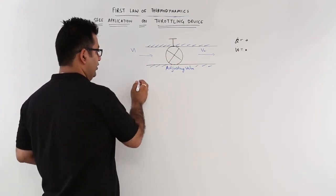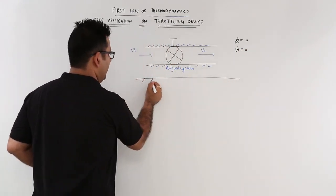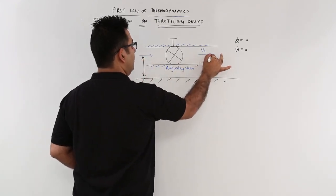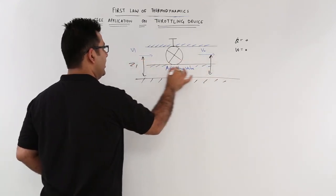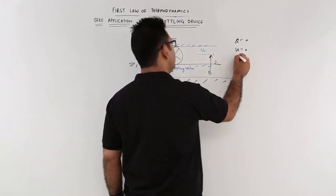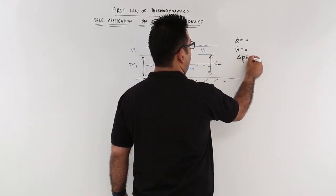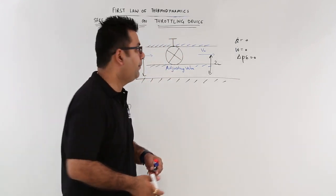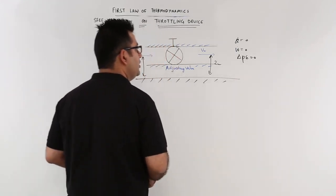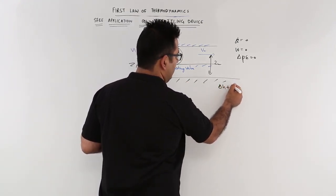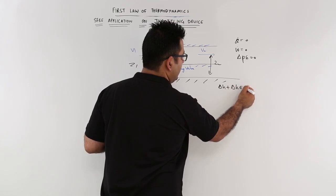Now one more thing. If you take this as your reference plane, the fluid elevation at both entrance and exit are the same. So you also have to assume that delta PE is 0. So what is left, if you take per unit mass basis, you are only left with delta H plus delta KE is equal to 0.